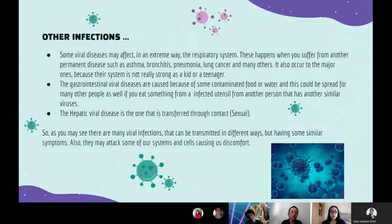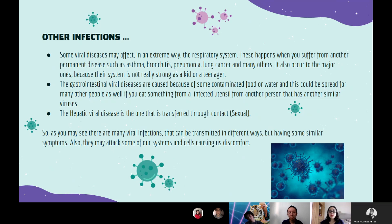Other infections: some viral diseases may affect in an extreme way the respiratory system. This happens if you suffer from pre-existing conditions such as asthma, bronchitis, pneumonia, and many others, or if you are elderly. We also have gastrointestinal viral diseases, which are caused by contaminated food or water. And hepatic viral diseases, which are transferred through contact — specifically sexual contact. As you may see, there are many viral infections that can be transmitted in different ways, but having some similar symptoms. They may also attack some of our systems and cells causing us discomfort.